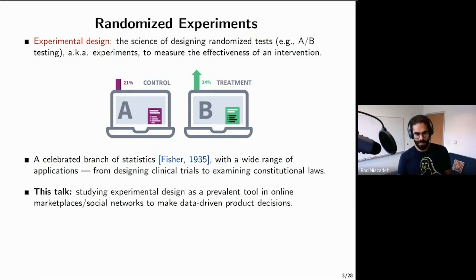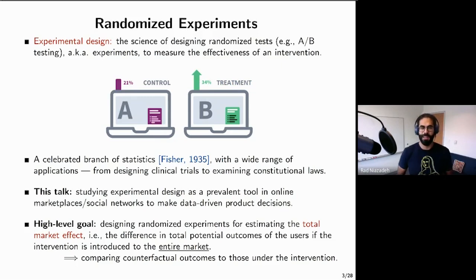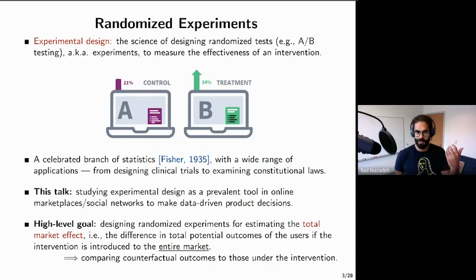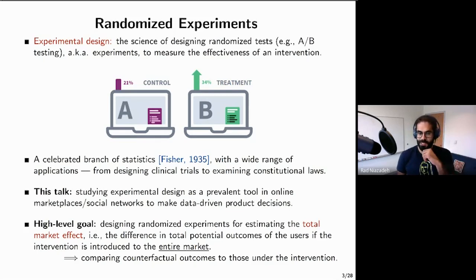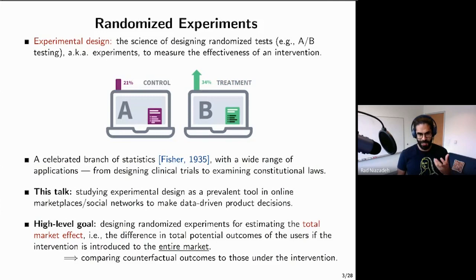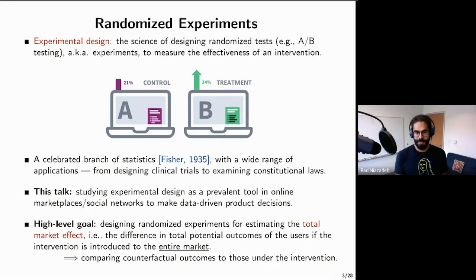The high-level goal we are pursuing in this talk is really designing randomized experiments that can estimate what I call the total market effect, which is the difference in the total generated outcome of all users when the intervention is introduced to the entire market. This is really what makes the problem challenging—this causal effect where you're comparing the counterfactual outcomes with the realized outcomes under intervention.